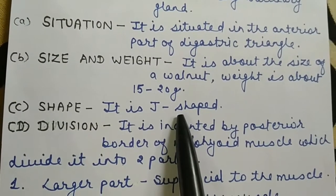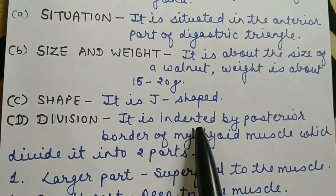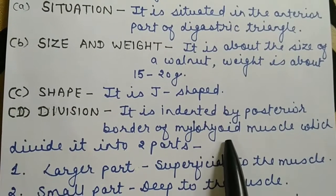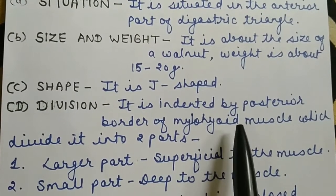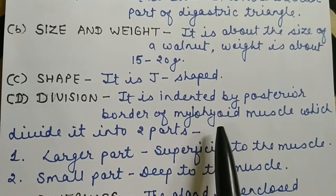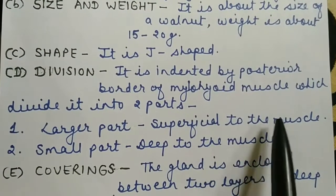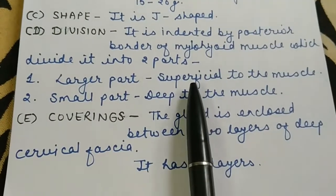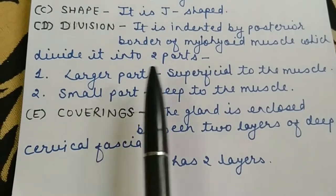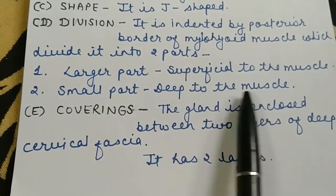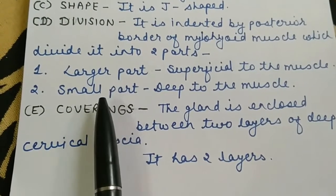Shape: it is J-shaped. Division: it is indented by the posterior border of the mylohyoid muscle, which divides it into two parts. The part superficial to the muscle is the larger part, and the part deep to the mylohyoid muscle is the smaller part. So it has two parts: a larger part and a smaller part.